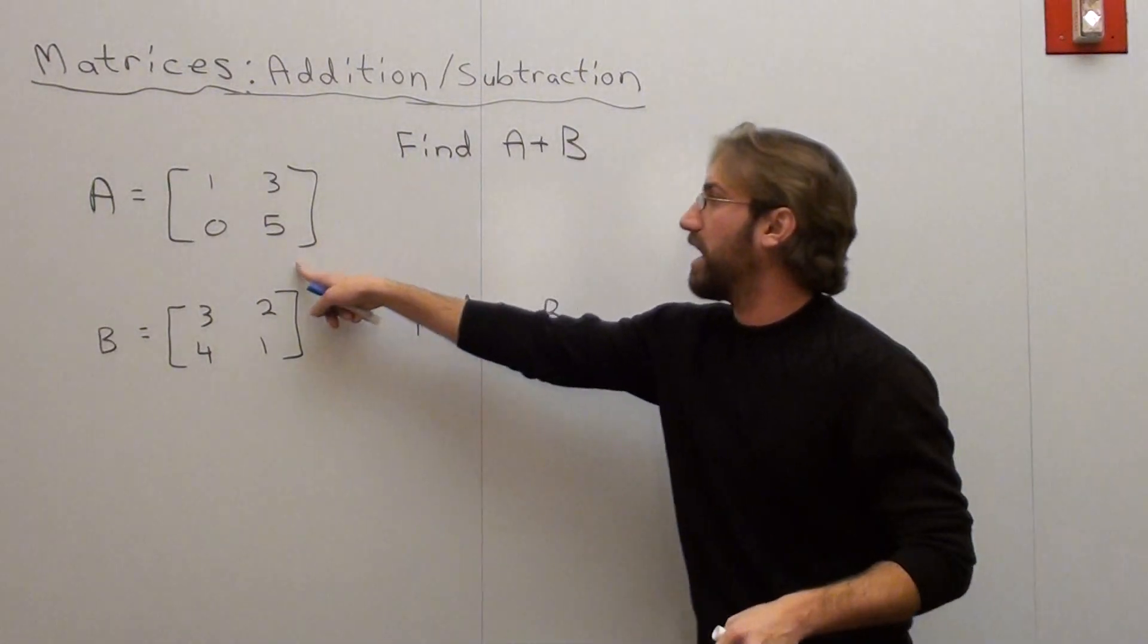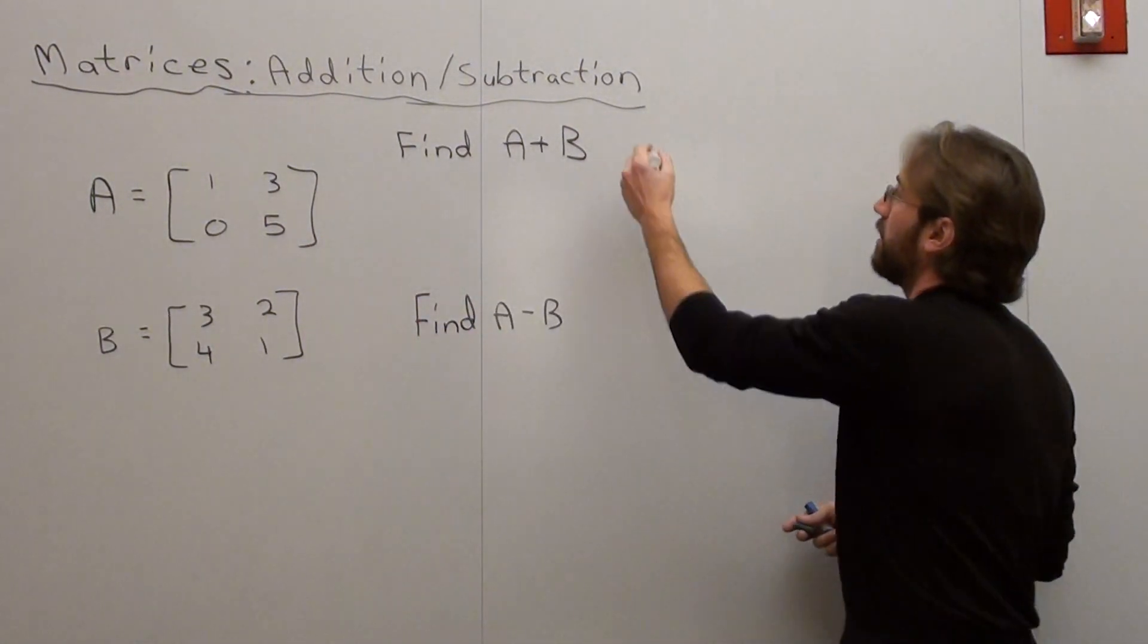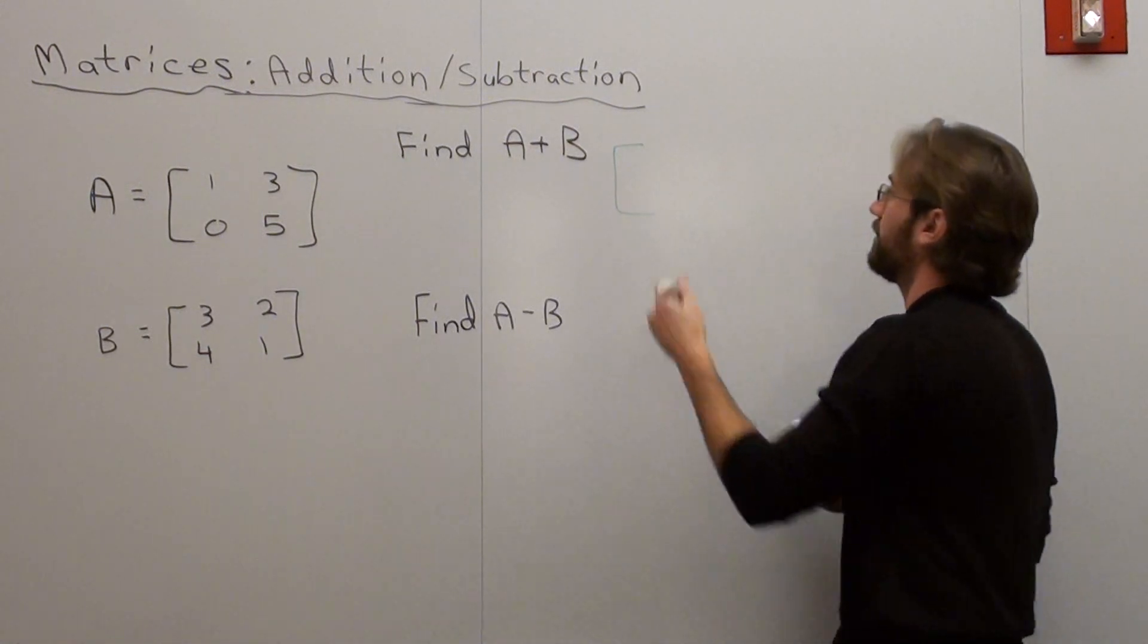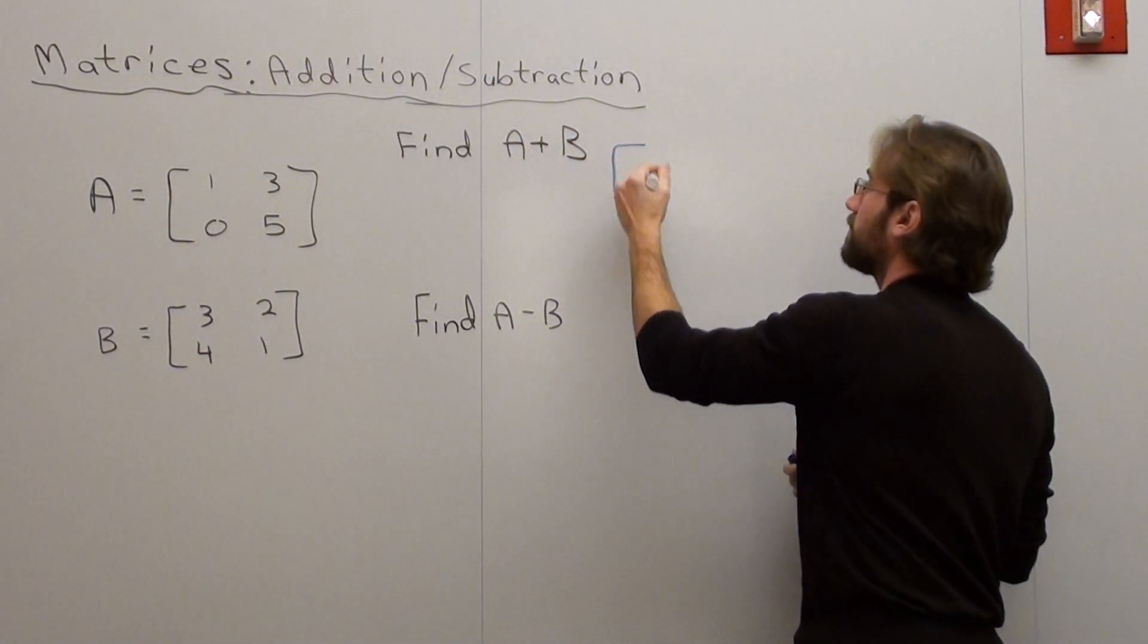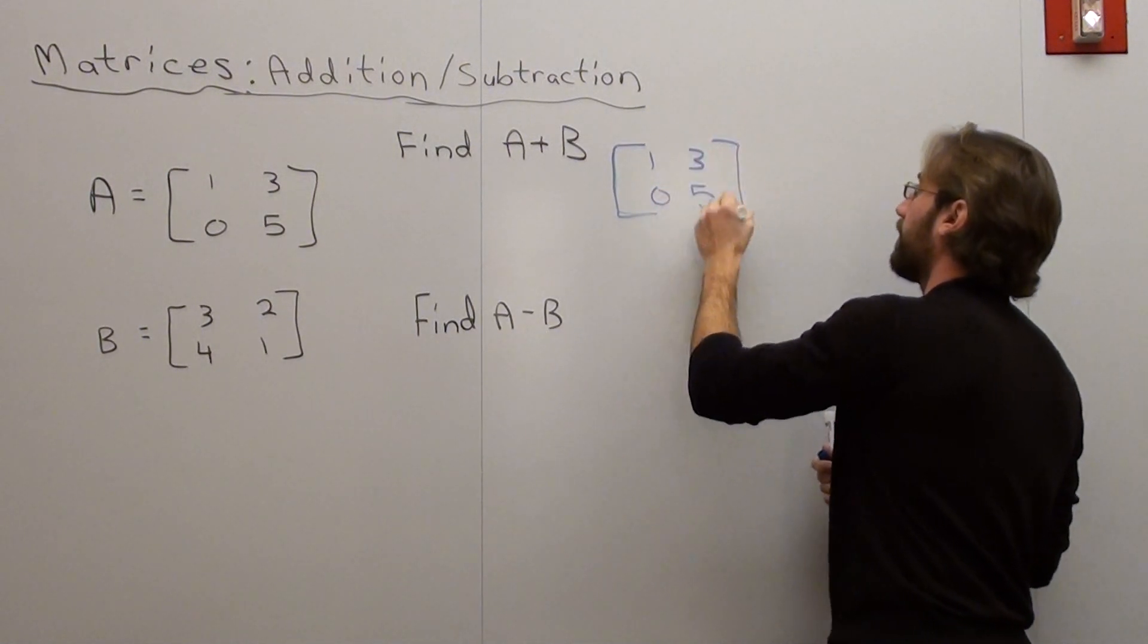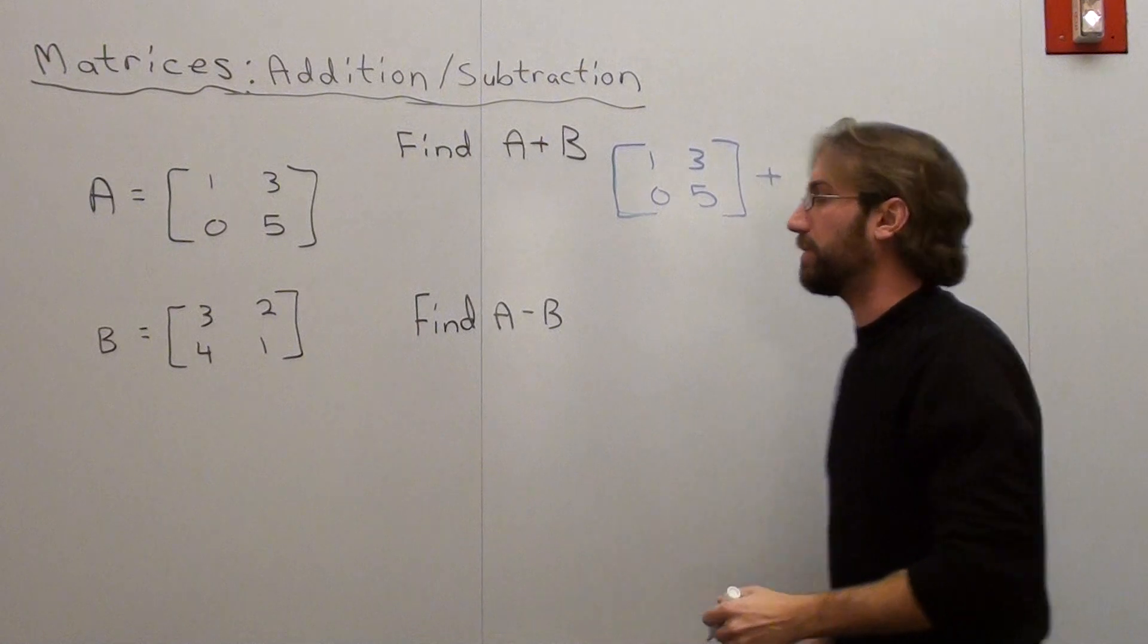So let's take our first matrix A, which is 1, 3, 0, 5. And we're going to add it to matrix B: 3, 2, 4, 1.